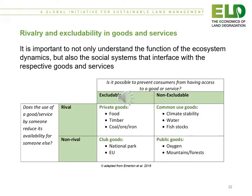It is important to not only understand the function of ecosystem dynamics, but also the social systems that interface with the respective goods and services. In this table, we outline the difference between the rivalry and excludability of goods and services.